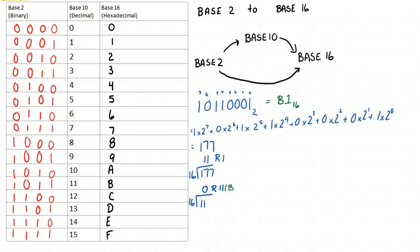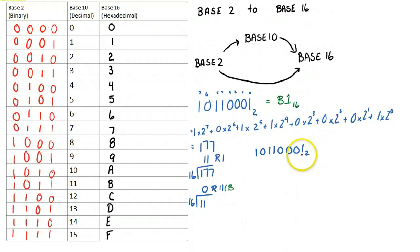It turns out what you can do as a shortcut is — let's take 1, 0, 1, 1, 0, 0, 0, 1 in base 2. As a shortcut, what you do is, starting from the right-hand side, break up the binary into groups of four. And then once you have those groups of four, convert each of those groups of four into hexadecimal.